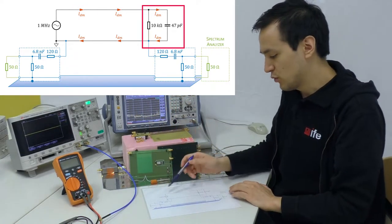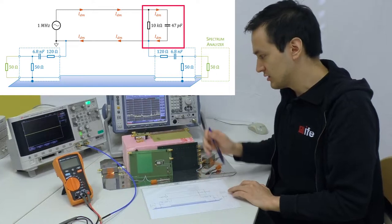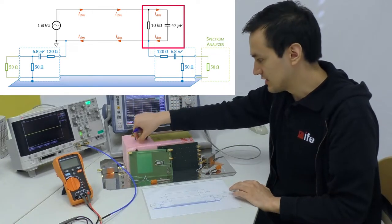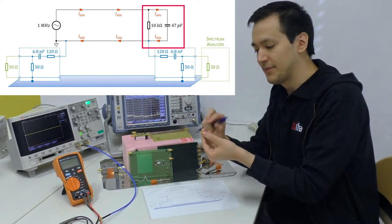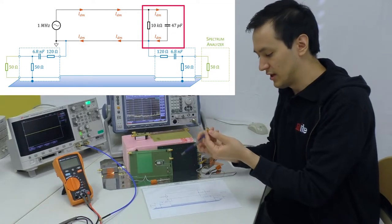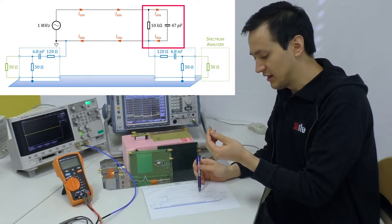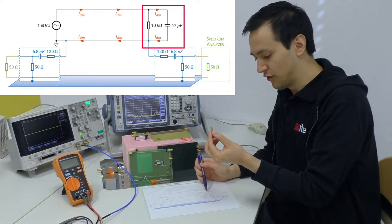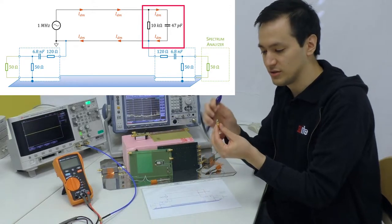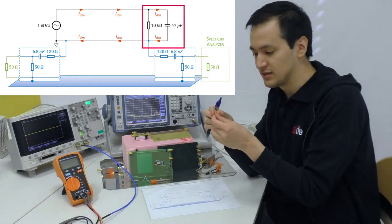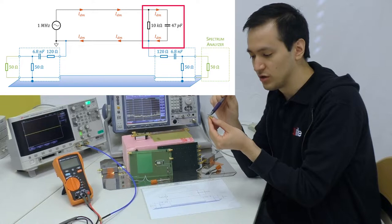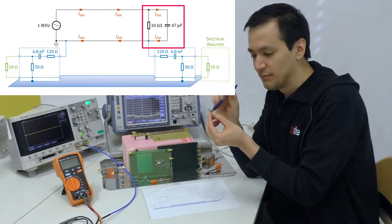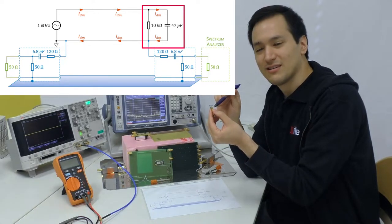And we will drive a load here — that's this device here. And here there is a 10 kilo ohm resistor in parallel to a 47 pF capacitor. So that's both devices here. They are soldered here on the SMA connector.